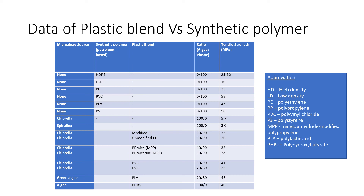Moving on to the last slide, this table shows the comparison between plastic blends and synthetic polymers. Tensile strength is a measure of a material's resistance to tension. As you can see in the top section of the table, the tensile strength for various synthetic polymers is shown. In the middle section, fully derived microalgae plastics such as Chlorella and Spirulina show significantly low tensile values. However, by blending microalgae biomass with synthetic polymers, seen in the bottom section of the table, the results are close to similar compared to synthetic polymers. Thus, bioplastics can be seen as a potential replacement to conventional plastics. That's all for my video. Thank you.